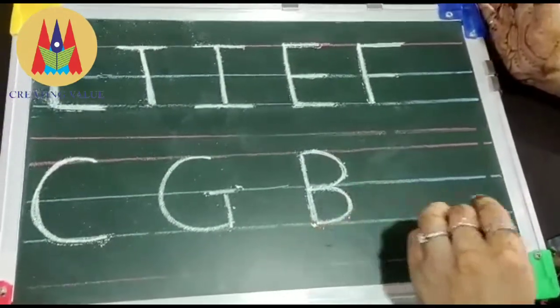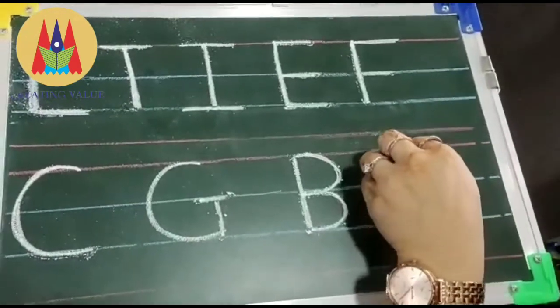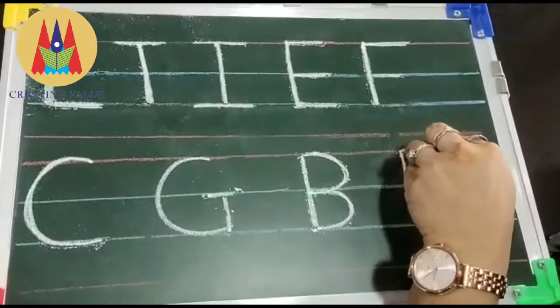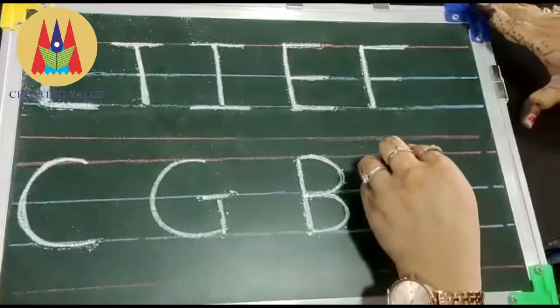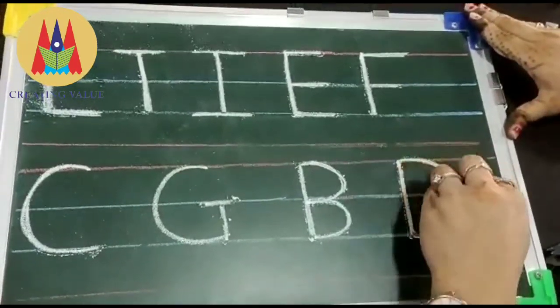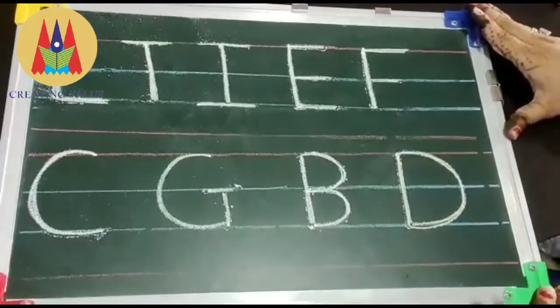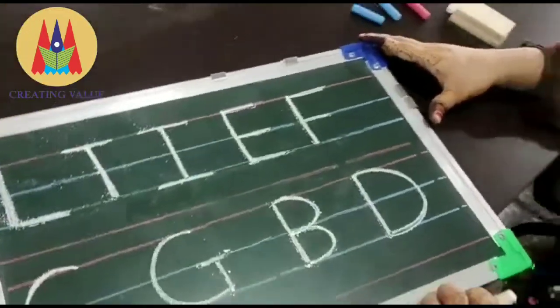Our next alphabet is D. Standing line red to blue and blue to red to blue — big curve. First standing line, red to blue and red to blue, curve. This is our D. D for dog, D for duck and D for dolphin. Thank you. I hope you learned these alphabets and practice at home.